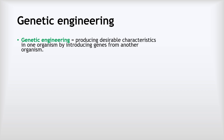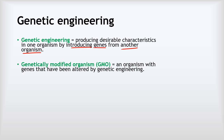Our second technique for improving the characteristics of animals and plants is called genetic engineering. Genetic engineering is about producing desirable characteristics in one organism by introducing genes from another organism entirely. This is something that can never happen naturally in the wild, but we can do it now because of incredible technology. This leads to the production of what we call genetically modified organisms, or GMOs for short — organisms with genes that have been altered by genetic engineering.